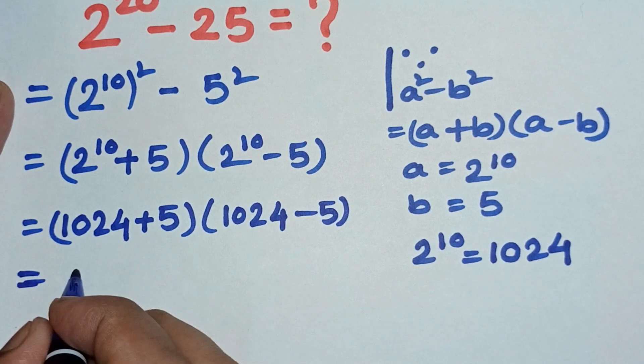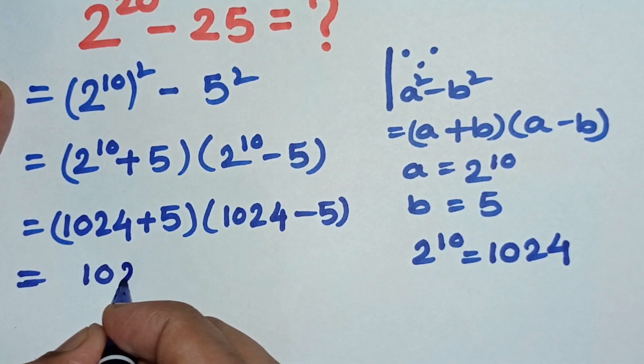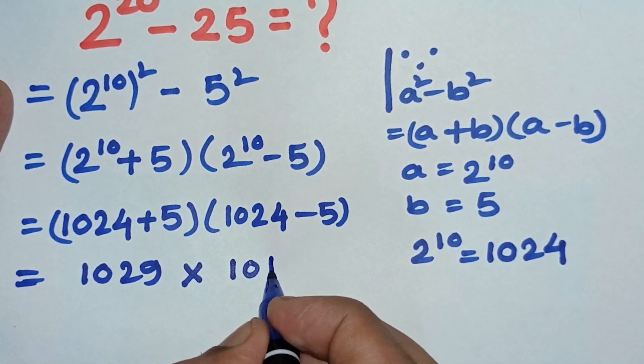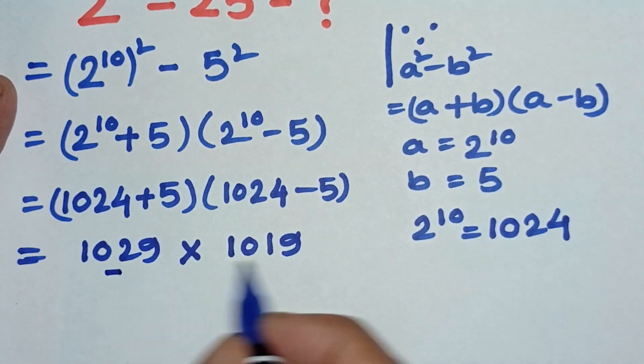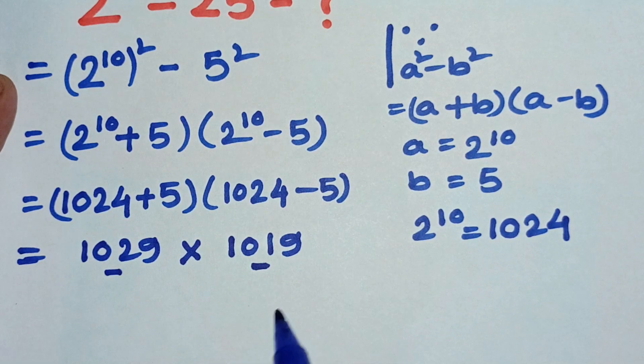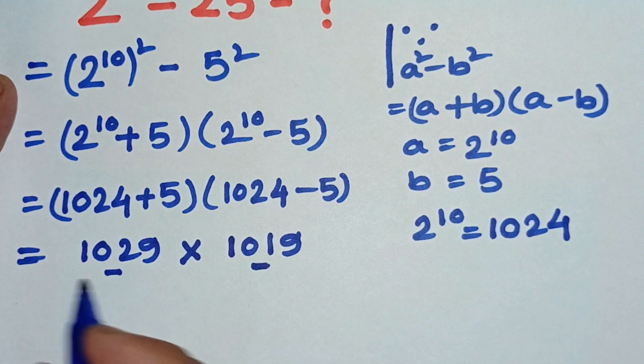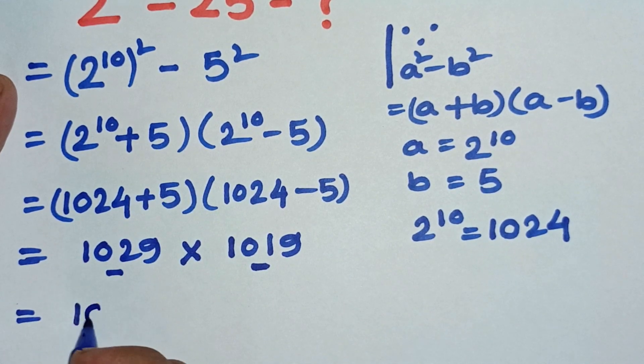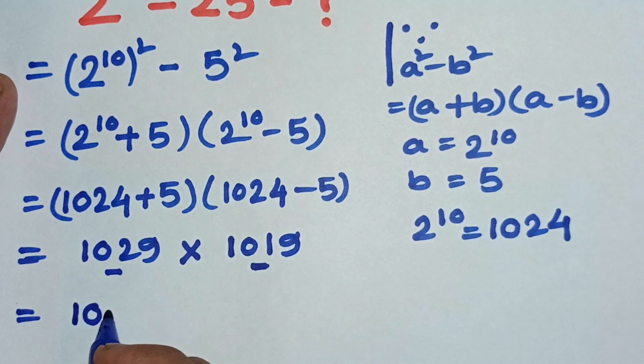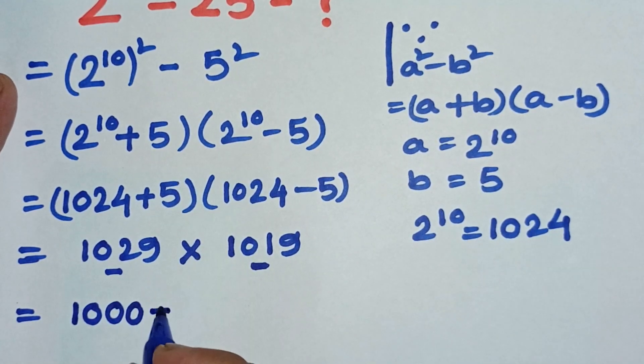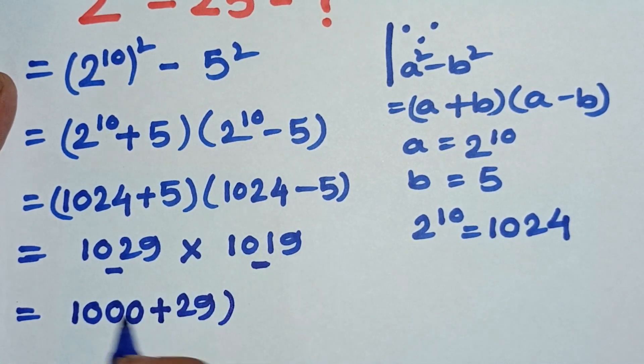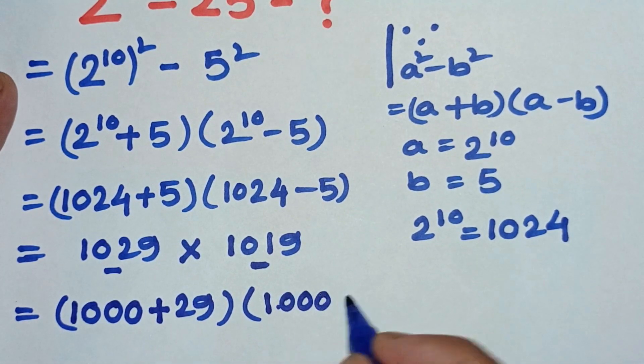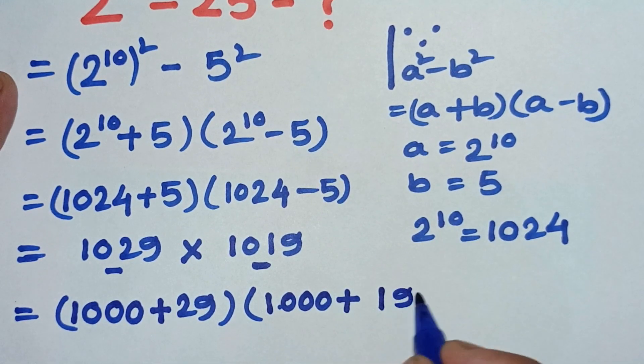Adding them we get 1029 into 1019. This part and this part multiplication is difficult without a calculator, so we can simplify this. We can write 1029 as 1000 plus 29 and 1019 as 1000 plus 19.